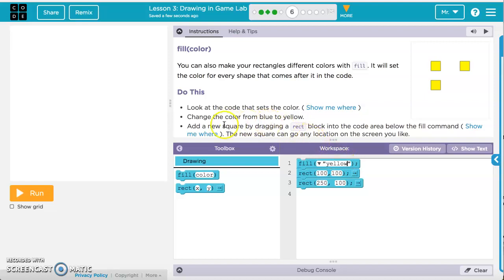Then it's asking us to add a new square by dragging a rectangle block, a rect, R-E-C-T block, into the code area below the fill command. So we can go ahead and place it in here.